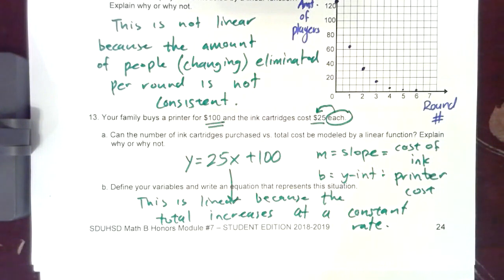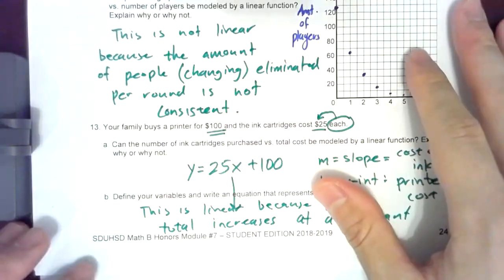So every time you buy an ink cartridge the cost will increase by a certain amount and it's the same amount every time. Okay, and that wraps up the lesson for this 7.1d lesson comparing linear and non-linear functions. I thought the first two pages were really good, you probably want to try those on your own.